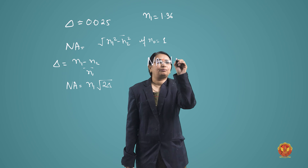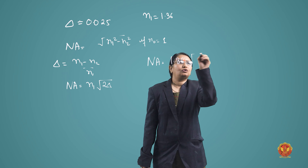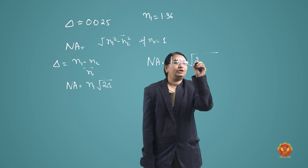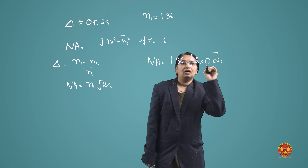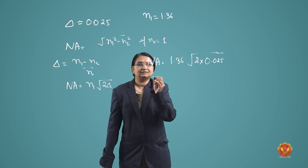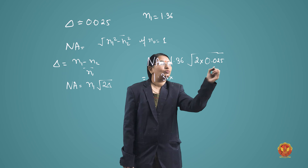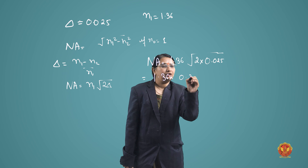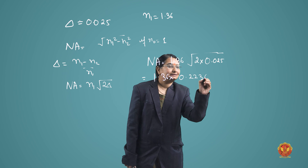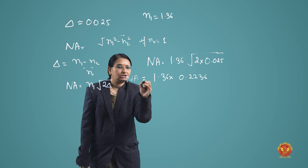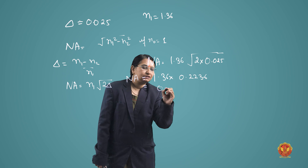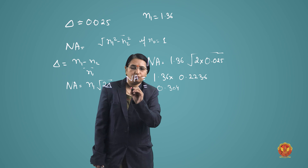So numerical aperture equals n1 times the square root of 2·delta, which is 1.36 times the square root of 2 into 0.025. Now you have to solve this value.